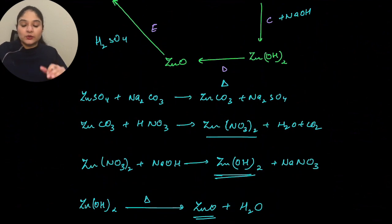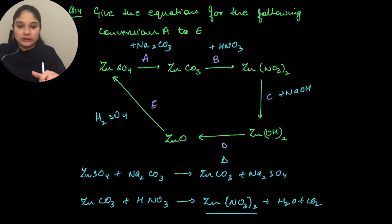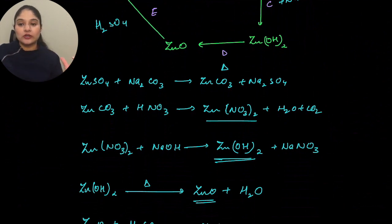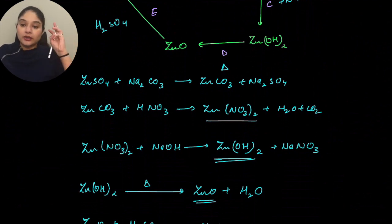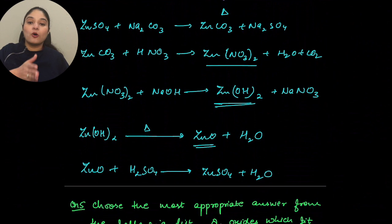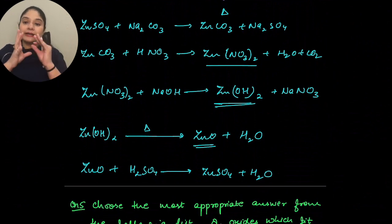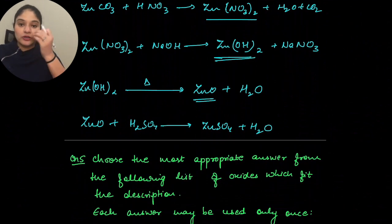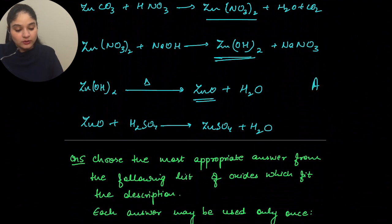Always try these questions in three steps. Step one: analyze the question and identify all the reactants needed. Step two: form your equations — you may get all of them or only some. Step three: balance all the equations. Do not get stuck on one equation; write whatever you know. At the end, write the names — not just formulas — for A, B, C, D, E.